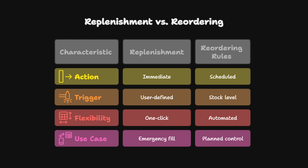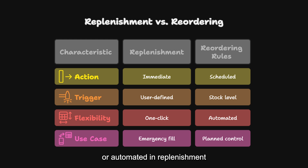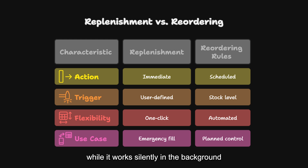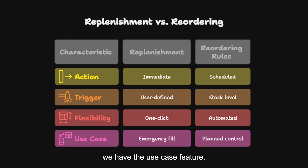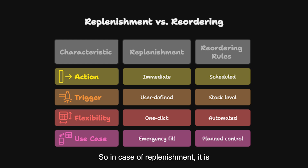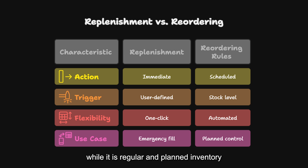Talking about flexibility, it is one-click ordered or automated in Replenishment, while Reordering Rules work silently in the background. For the use case feature, Replenishment is used for emergency or irregular stock filling, while Reordering Rules are used for regular and planned inventory control.